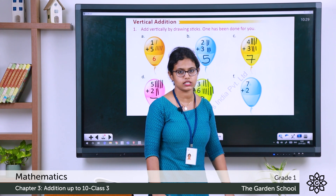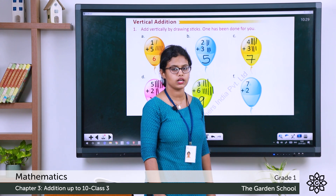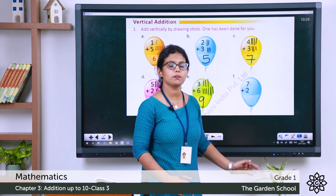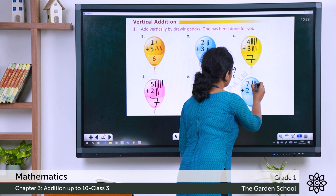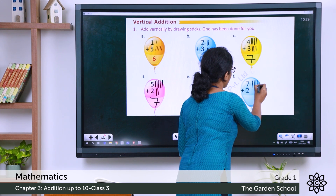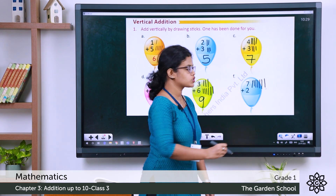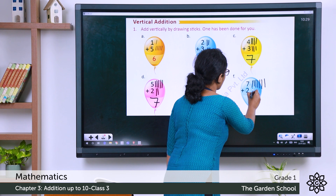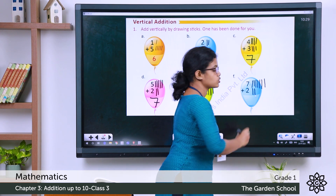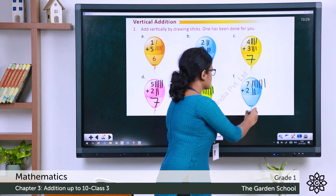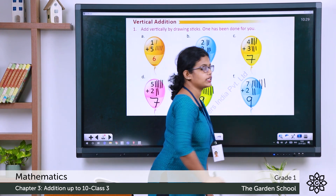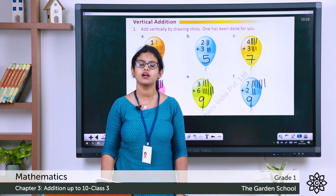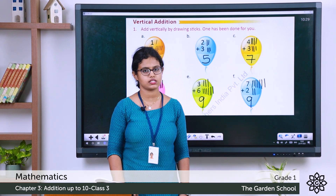What about the next one? 7 plus 2. Draw 7 sticks: 1, 2, 3, 4, 5, 6, 7. Then 2 sticks: 1, 2. The total is 9. So 7 plus 2 is 9. That is the right answer.